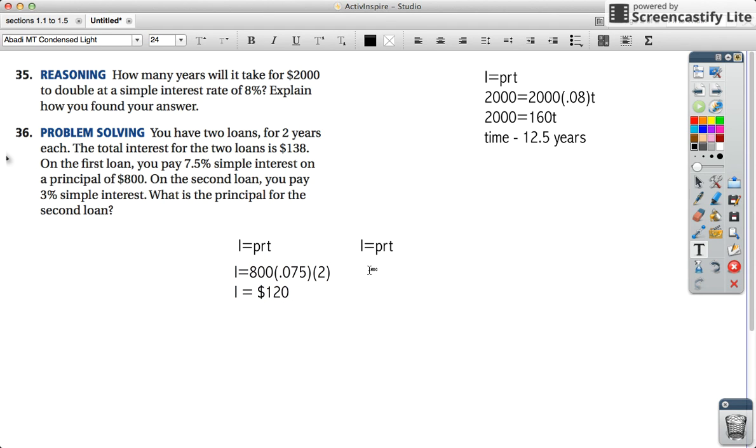Well, we know the combined interest is $138. So if it's $138, this one has $120. That means that the interest here is going to be $18. The principal, we don't know, because we have to find that. The rate is 3%, so 0.03. And for two years, so we solve this.